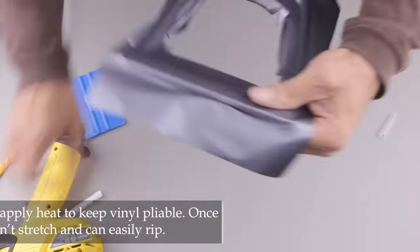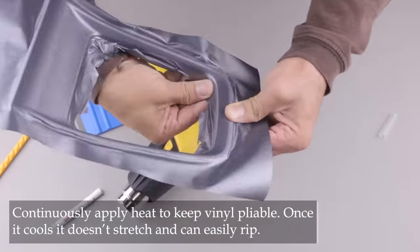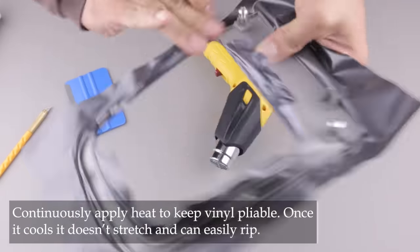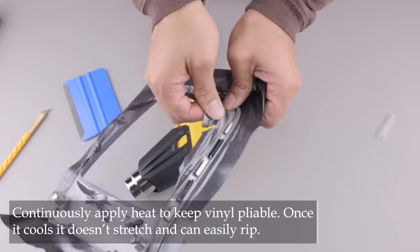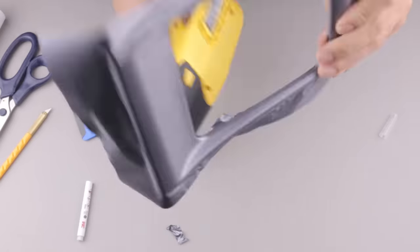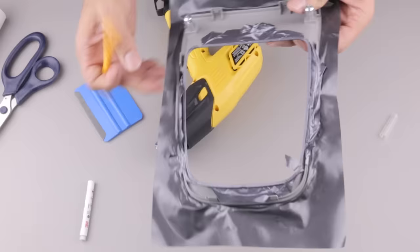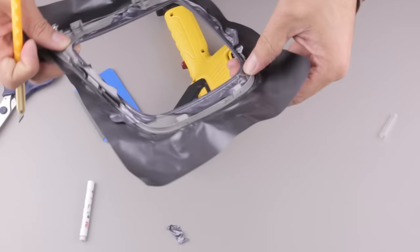From this point it's basically rinse and repeat. Keep applying heat so that the vinyl remains pliable. If you try to stretch it while it's cold you can easily rip it. The goal here is to wrap the vinyl around the rim and then once we're done we can trim the excess. This requires a bit of patience so take your time and you'll be okay.